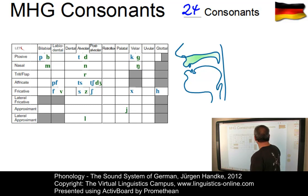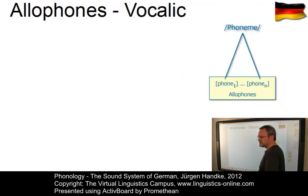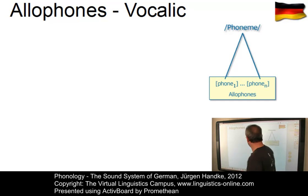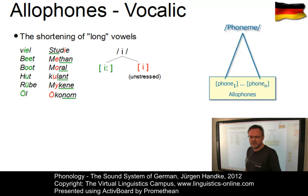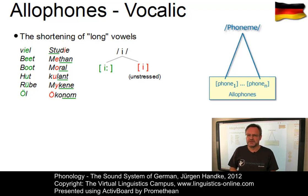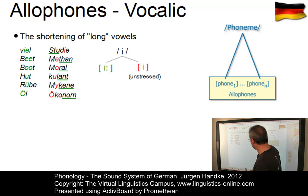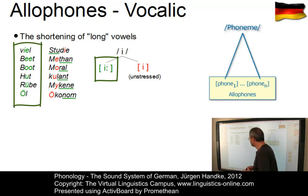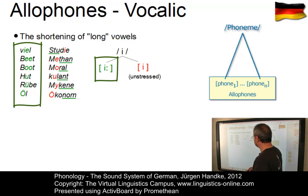Let's look at vocalic variation first. There is one effect referred to as the shortening of long vowels. Depending on their position — whether they are stressed or unstressed — most long vowels can be shortened. Let us look at the examples. I will first produce the long ones which occur in a stressed position: Viel, Beet, Boot, Hut, Rübe and Öl. And now the short ones where the vowel does not occur in a stressed position.